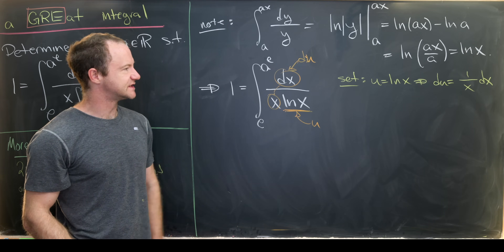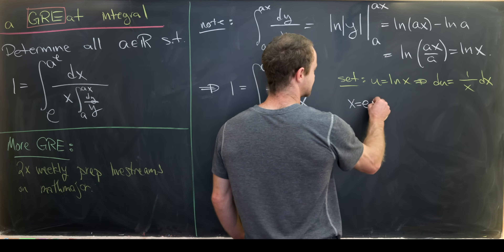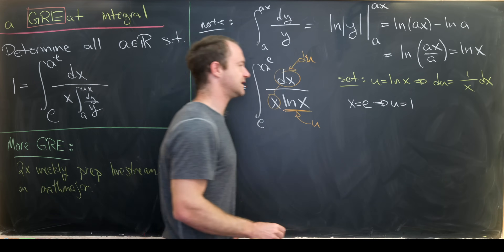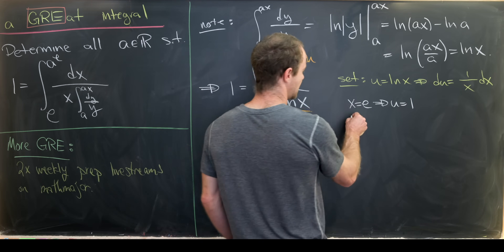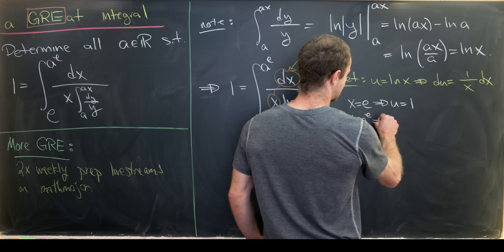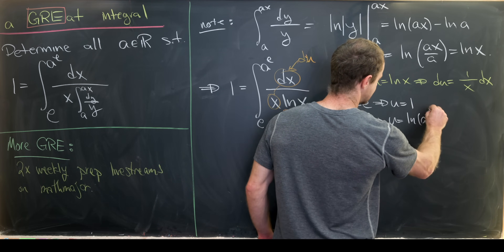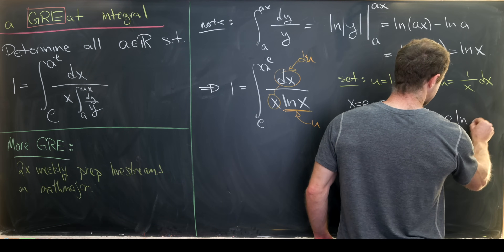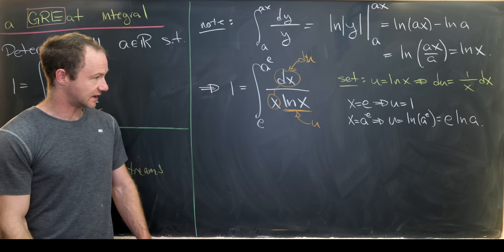Let's use this substitution to change our bounds as well. When x equals e, u equals 1 because the natural log of e is 1. When x equals a to the e, u equals the natural log of a to the e, which is the same as e times the natural log of a, using exponent rules.